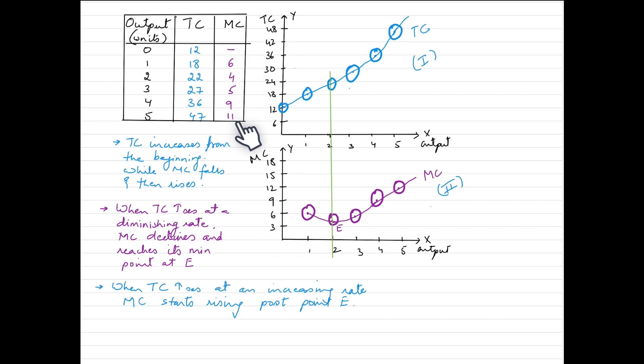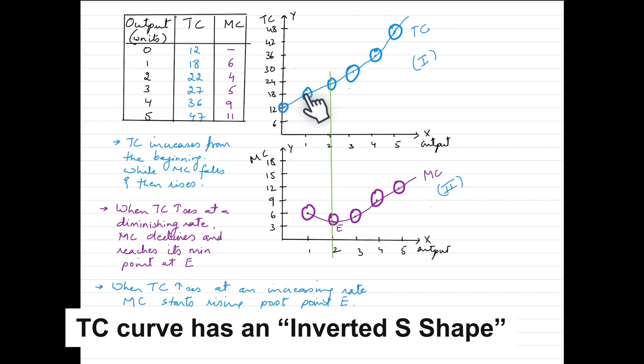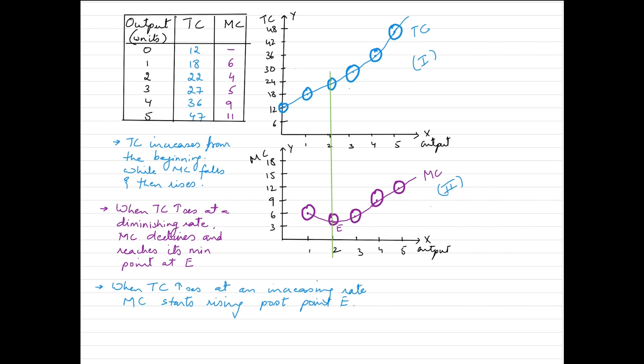When we plot these numbers in graph 1, we will get a total cost curve somewhat like this. It should have an inverse S shape. If you plot it on a graph paper with correct scales, you would probably have a proper inverted S shape. In the second panel, we have the marginal cost curve plotted here with the help of these figures.